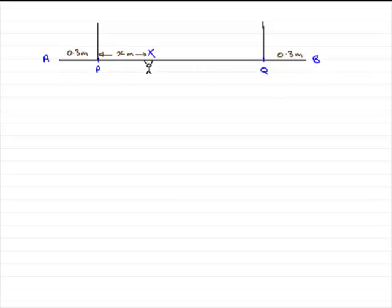Now we're told that it's a uniform beam of length 2 meters. So if we've got 0.3 meters here, 0.3 meters here, that's already 0.6 meters. So that means that the distance between these ropes here is going to be 1.4 meters.